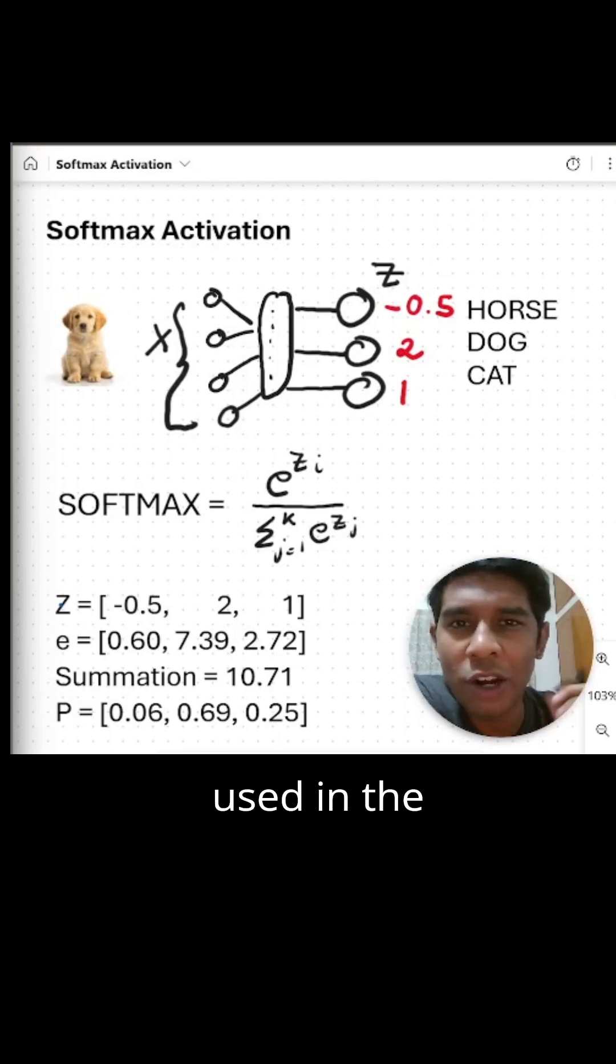The softmax activation function is used in the output layer of multi-class classification networks to convert real valued outputs into probabilistic outputs. But to understand how that works, let's consider this example.